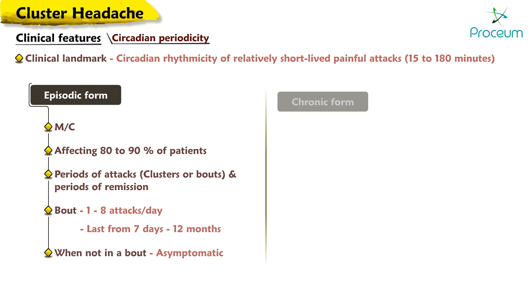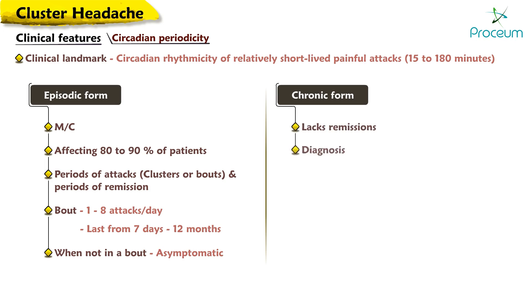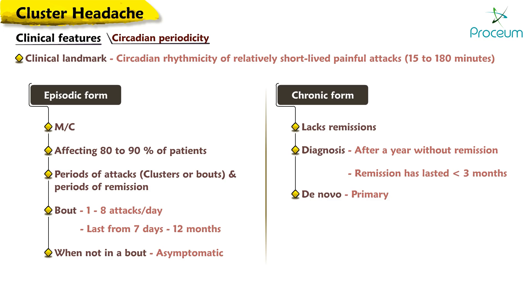The chronic form of cluster headache lacks remissions and is diagnosed after a year without remission, or if remission has lasted less than three months. Chronic clusters may arise de novo (primary chronic cluster headache) or evolve from the episodic type (secondary chronic cluster headache).